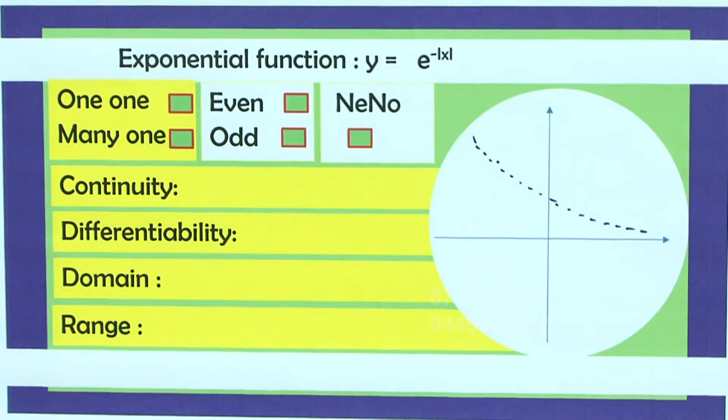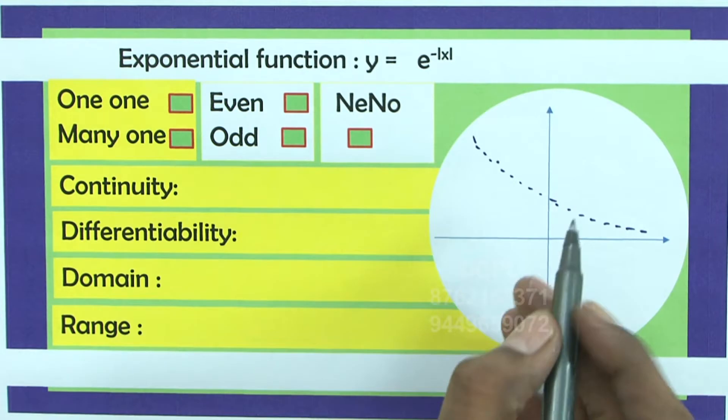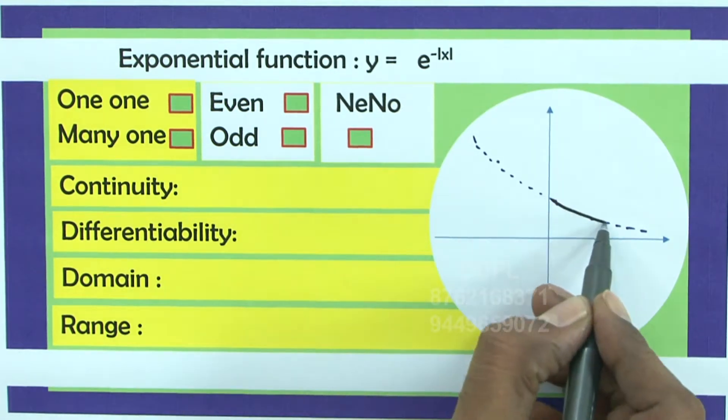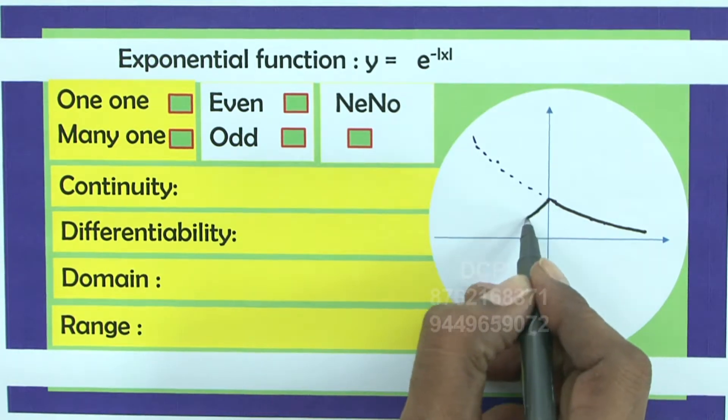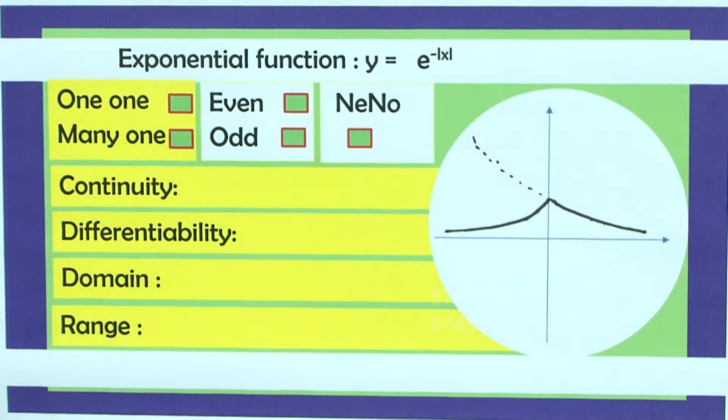So retain the part of the graph you have towards right side of y-axis. Use y-axis as mirror, draw the replica of the same. Is that correct?